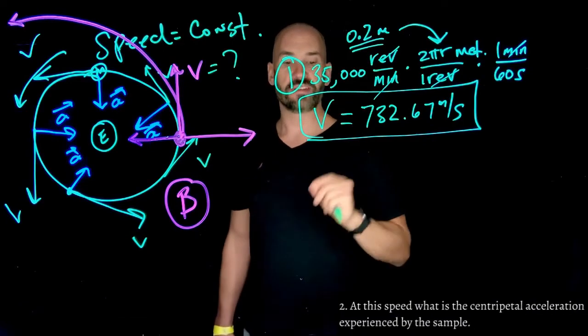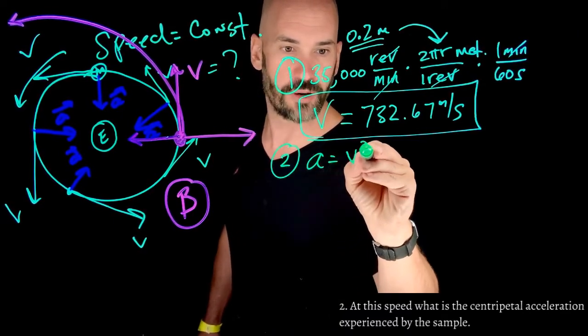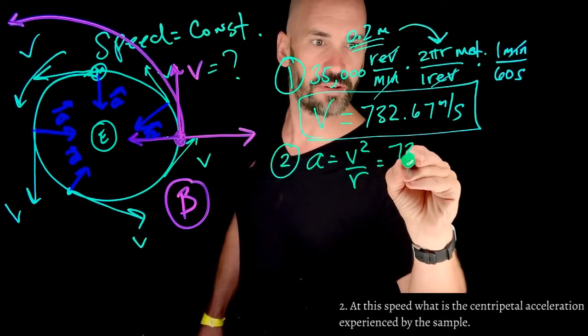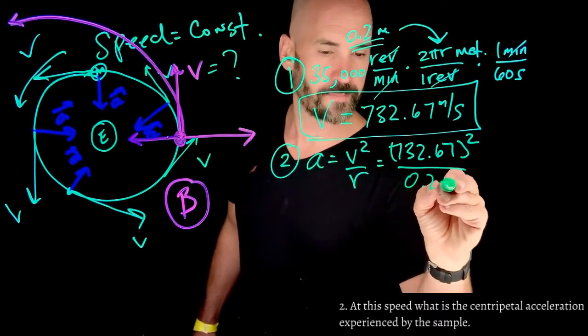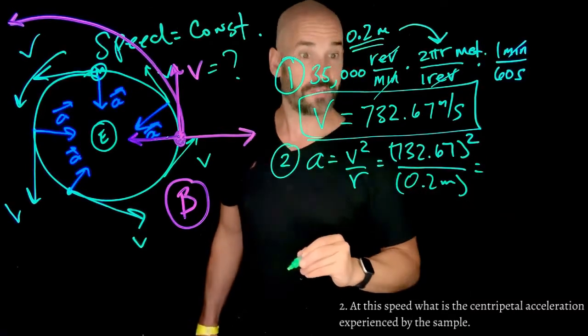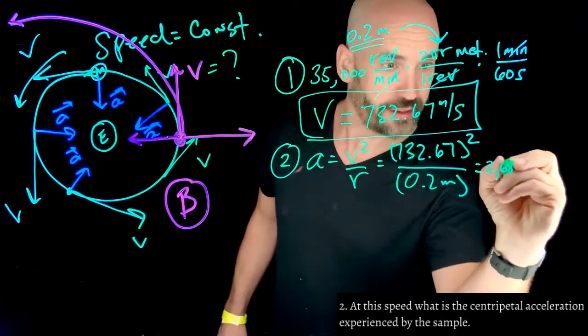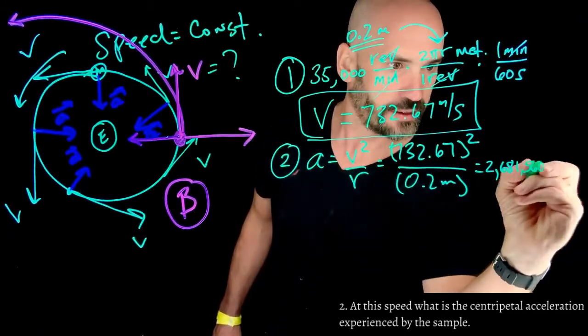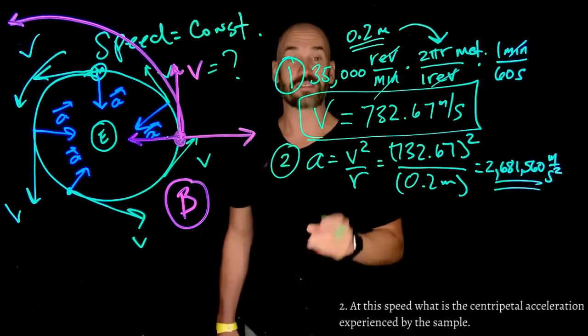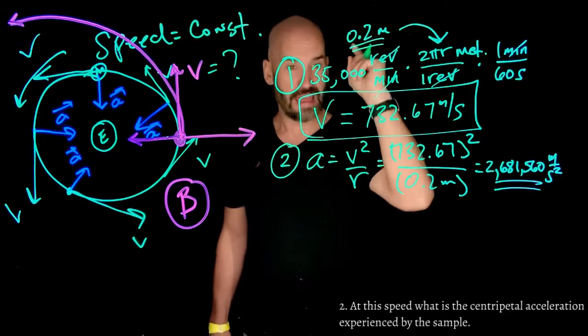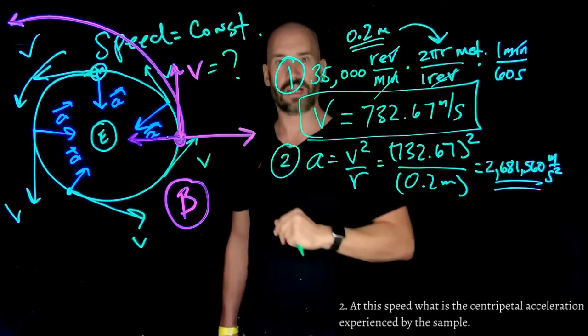Second question. At this speed, what is the centripetal acceleration experienced by the sample? All right, so let's do that. Remember, centripetal acceleration is just a equals v squared over r. We just found the velocity is 732.67. We square that, divide by the radius of the centrifuge, which is, again, 0.2 meters. And I get a value of, quite a hefty value, 2,681,560 meters per second squared. You might be asking, should it be that high? And the answer is yes. That's the whole point. We are harnessing centripetal acceleration at huge magnitudes to actually separate these. And by the end of this problem, you'll see why the platelets, the blood cells, and the plasma will actually separate.